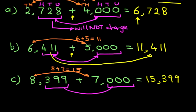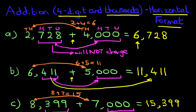And that is the addition of four digit numbers and thousands using the horizontal format.